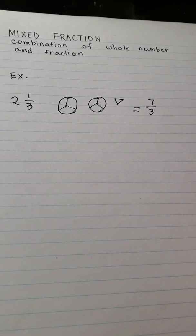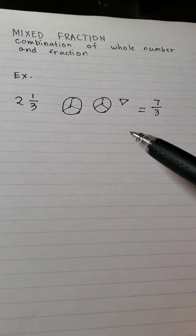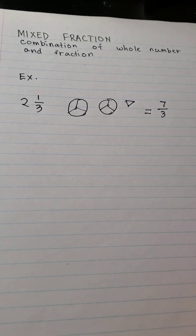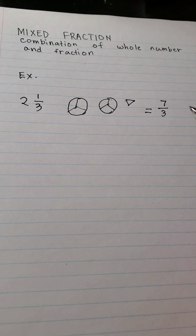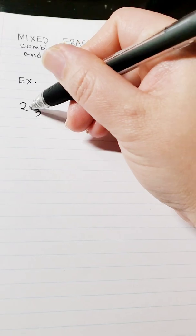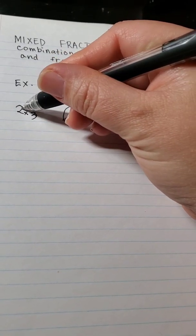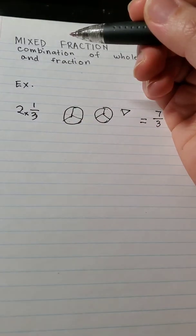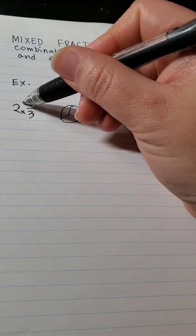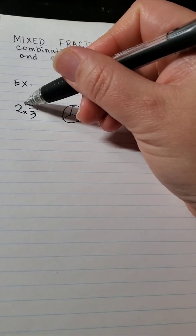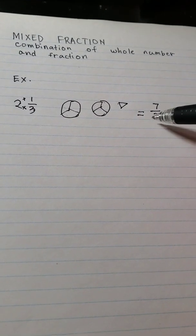If you don't want to use the illustration and just convert it directly, you can also try doing this. 2 times 3. So you multiply the denominator with the whole number, which is 6, and then you add the numerator and that's 7 over 3.